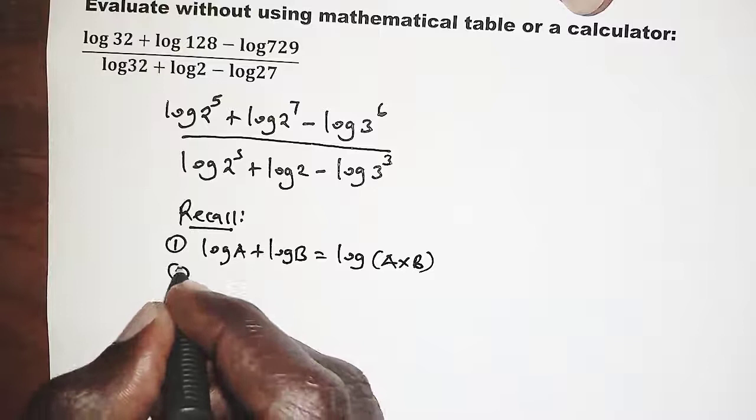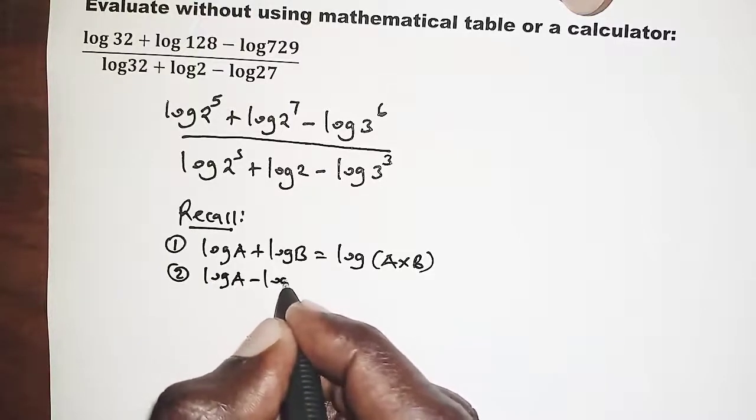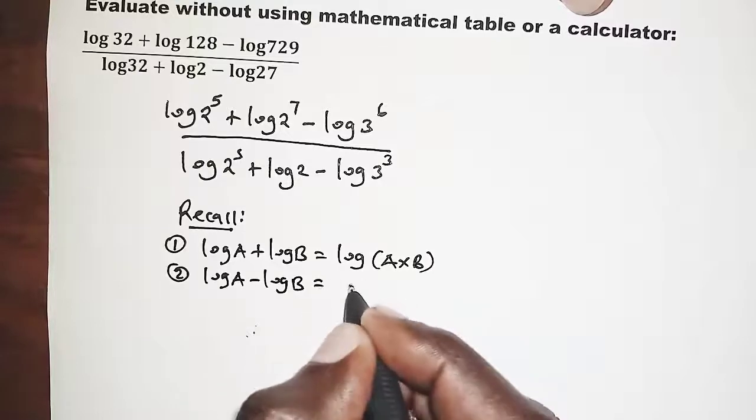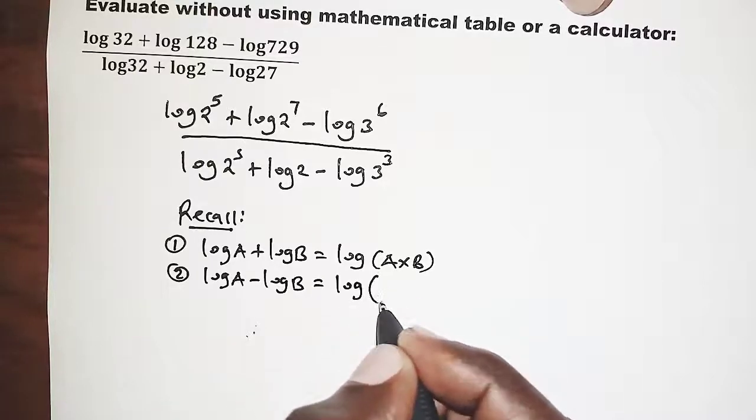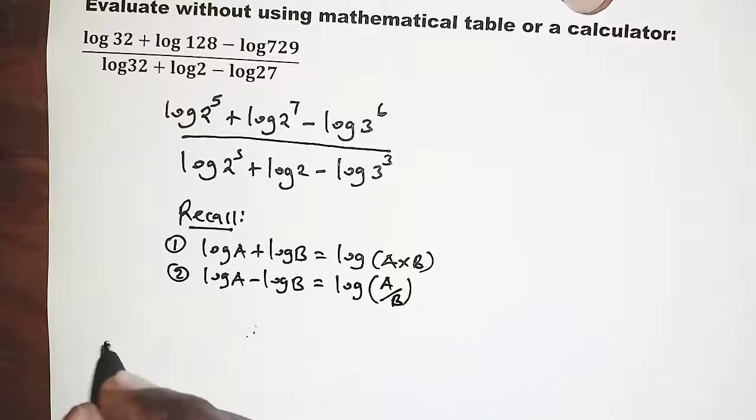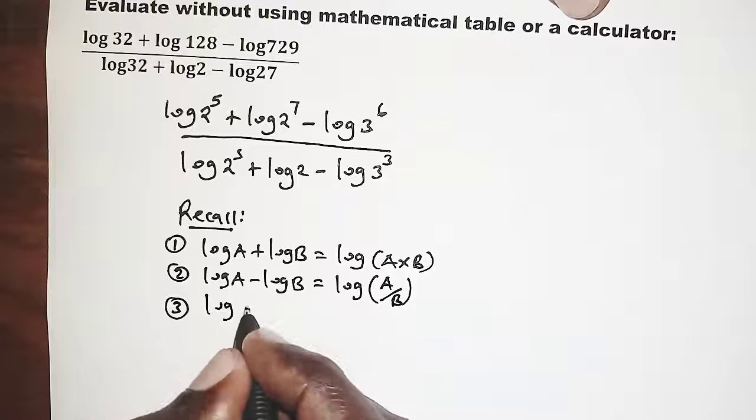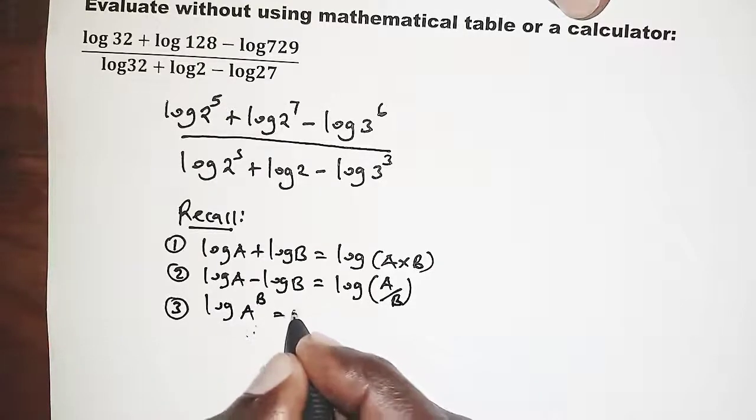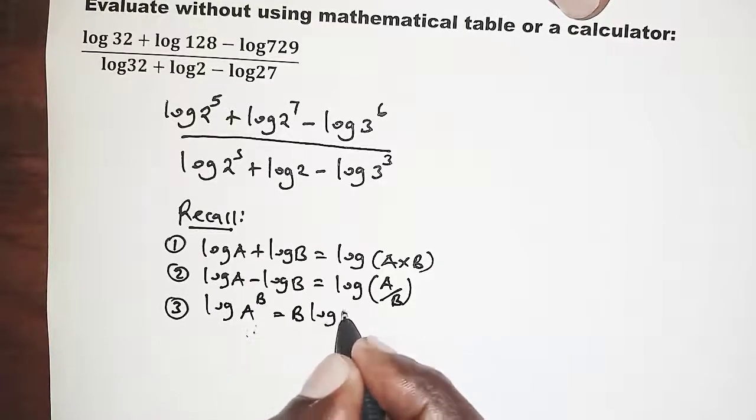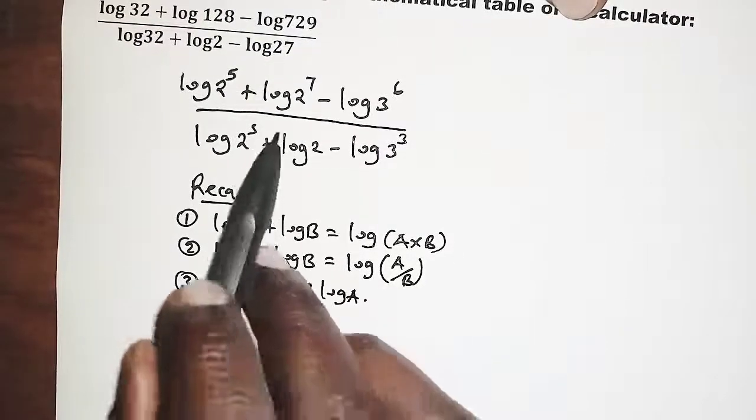We also have secondly logarithm of a minus logarithm of b. This should be logarithm of a divided by b. And finally we also have logarithm of a raised to power b. This becomes b log a.